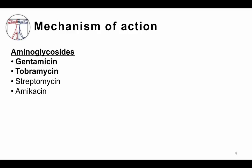Let's start by talking about the mechanism of action. The aminoglycosides fall into a category of antibiotics that tend to inhibit protein synthesis. The main aminoglycosides are gentamicin, tobramycin, streptomycin, and amikacin. Gentamicin and tobramycin are the two most important to know at this time; the other two are used less frequently.